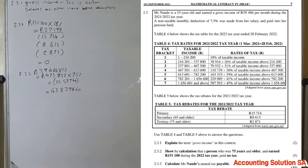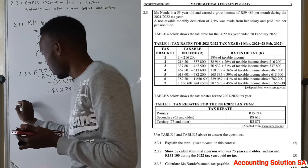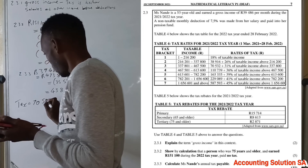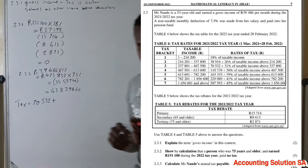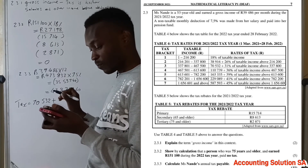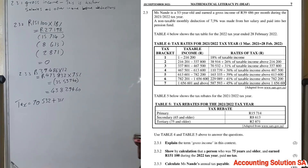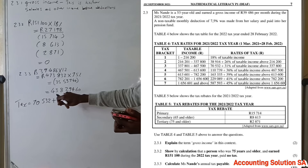Now we check which tax bracket R438,294.60 falls into. This amount is between R337,800 and R467,500, so this person falls under Bracket 3. Under Bracket 3, this person pays a base amount of R70,532 plus 31% of the amount above R337,800. We now need to calculate that 31% portion.